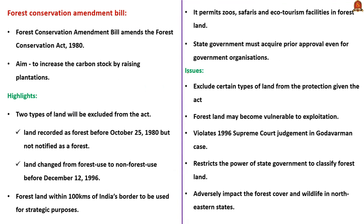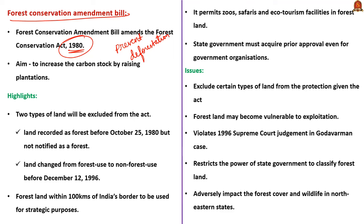Now, let us learn about the Forest Conservation Amendment Act. Recently, the Central Government introduced many amendments in the Forest Conservation Act. The Forest Conservation Act of 1980 was enacted to prevent large-scale deforestation, and it provides restrictions on diverting forest land for non-forest purposes. The recent amendment bill tries to include and exclude certain types of land from the scope of the Act. Let us see the important features by comparing with the original Act of 1980.